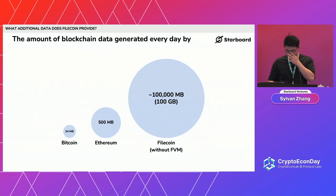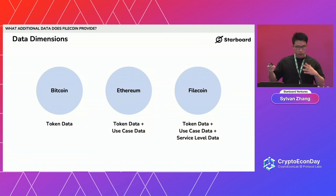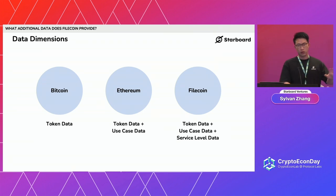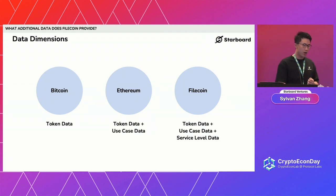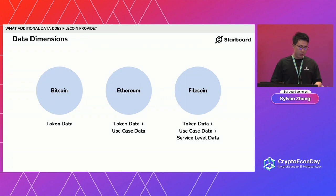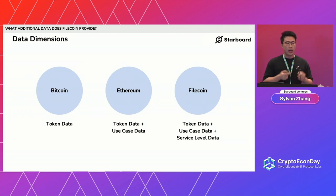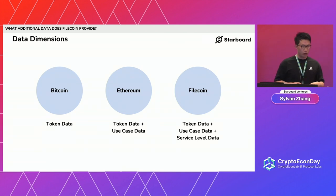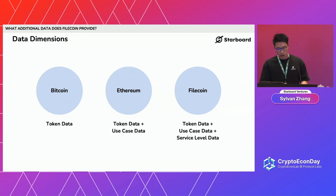Why does Filecoin generate so much data? It has more data dimensions. Bitcoin is really simple — you mostly just record token data: token minting, token transactions, et cetera. For Ethereum, because it can execute code and smart contracts, it also has use-case data. For Filecoin, there is token data, use-case data, and also service-level data. That service-level dimension is quite novel compared to other token economies.